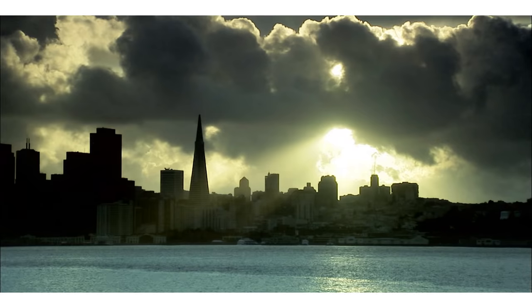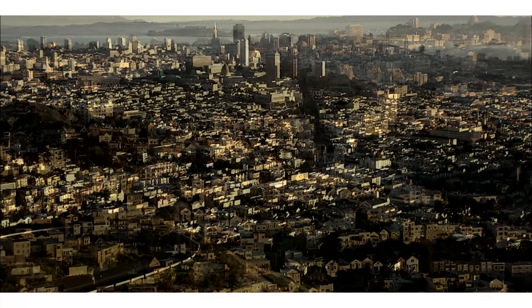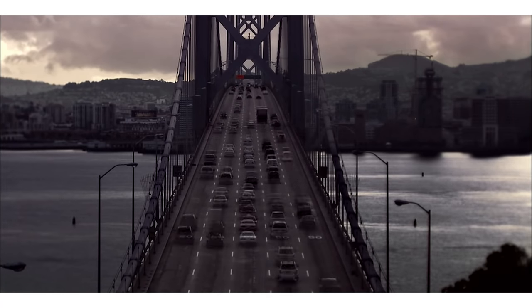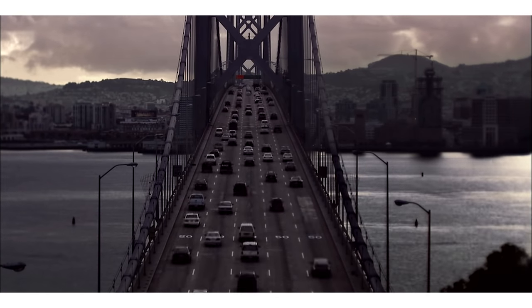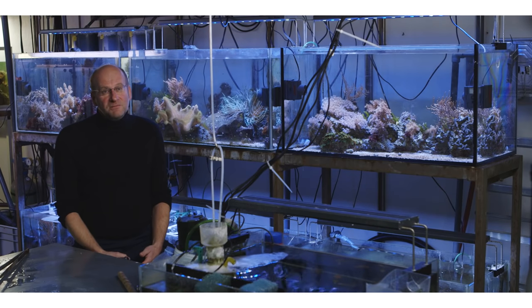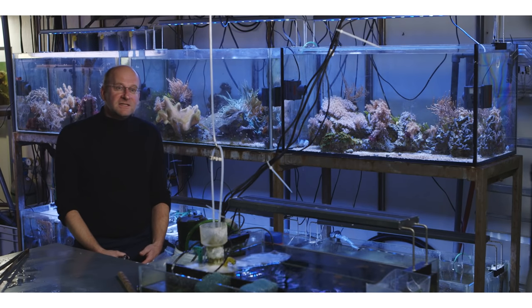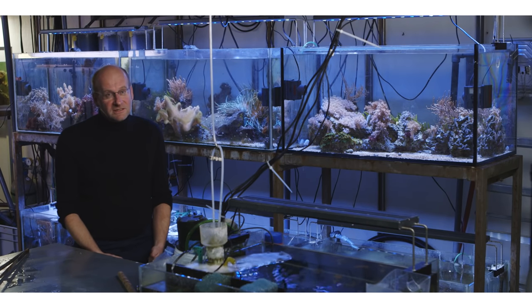At the same time, an increasing proportion of megacities are directly at the coast, and an increasing proportion of the world population unfolds its activities along the coastlines. Marine diversity and marine ecosystem diversity is highest at the coastlines. So we basically have a clash between human population demands on the one hand and biological activity and marine ecosystem integrity on the other.